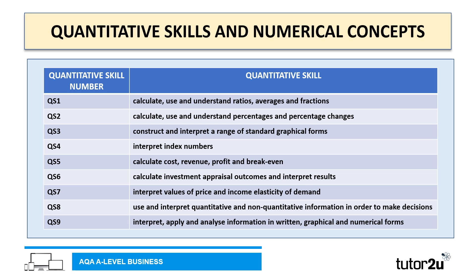Quantitative skill seven is interpreting values of price and income elasticity of demand. Quantitative skill eight is to use and interpret quantitative and non-quantitative information in order to make decisions. And the final quantitative skill, quantitative skill nine, is to interpret, apply and analyse information in written, graphical and numerical forms.